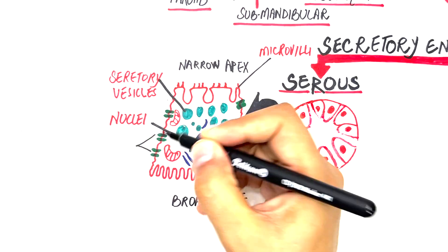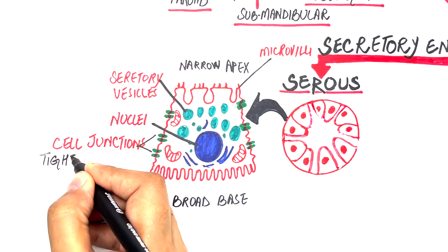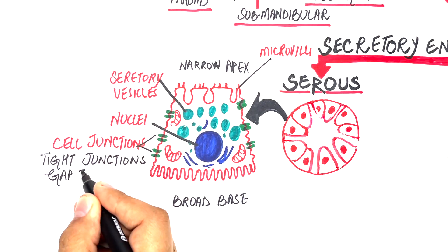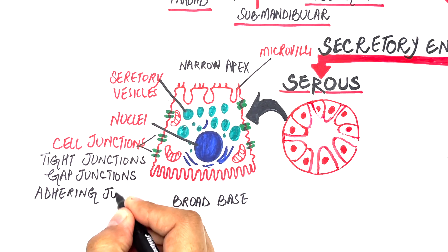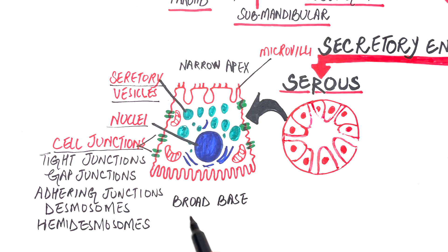A variety of cell junctions located between the cells are also observed. These include tight junctions, gap junctions, adhering junctions, desmosomes, and hemidesmosomes. These cellular junctions help in intercellular communication, allowing the passage of certain ions and molecules between cells. They also hold cells together, making the cells of the acinus a single functional unit.